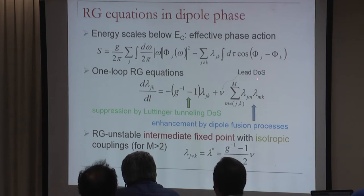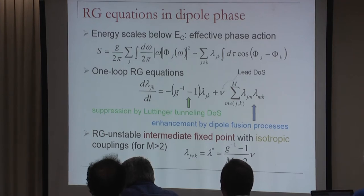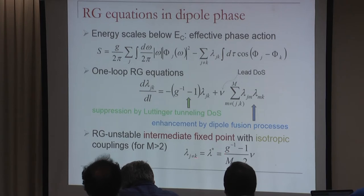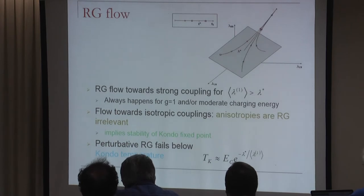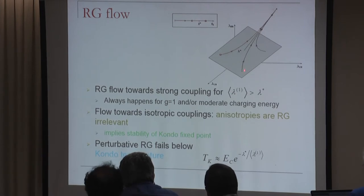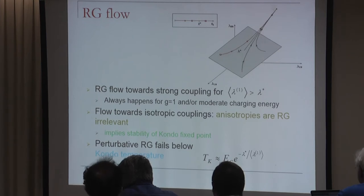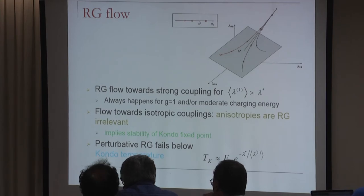There is an intermediate fixed point only present when interactions exist; without interactions it flows to zero. For G=1, we are always above the critical point and the RG flow is always toward strong coupling. Moreover, it proceeds such that the couplings become increasingly isotropic—the lambda_JK become more and more equal—and one can show analytically that all anisotropies die out during the RG flow, which implies the stability of the Kondo fixed point.